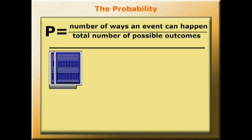So what are the chances of drawing a black card? Any club or spade might be drawn. So there are 26 possible ways this event can happen and 52 possible outcomes. So the probability of drawing a black card is 26 over 52.